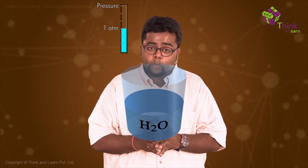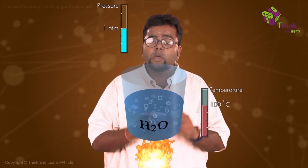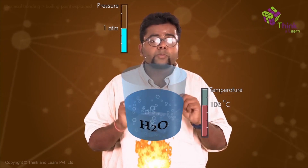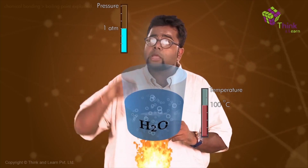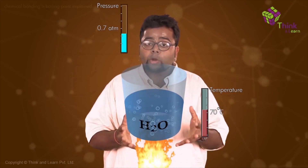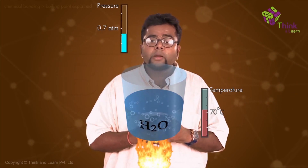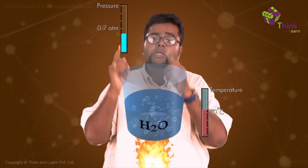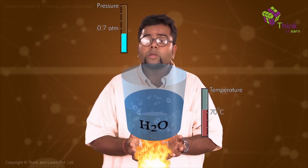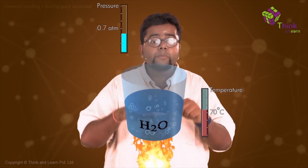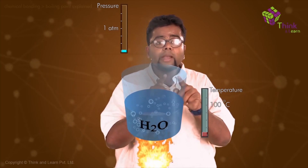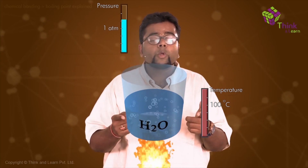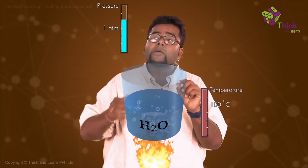Suppose if I have my atmospheric pressure fixed and water is boiling at 100 degrees Celsius — why? Because at 100 degrees Celsius, the amount of vapors that water is producing is counterbalancing the atmospheric pressure. Now, in the second case, if I lower down the atmospheric pressure, do you think water would still need 100 degrees Celsius to produce enough vapor to counter the atmospheric pressure? No. So the amount of heat reduces and the temperature also decreases. So you keep on decreasing the pressure, the boiling point would also keep on decreasing. And if you increase the pressure, the boiling point would also start increasing. So it is all a matter of pressure.